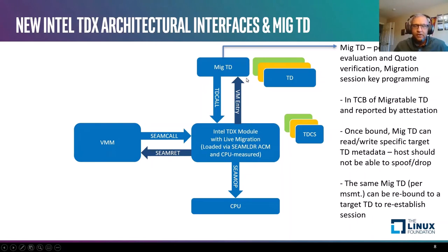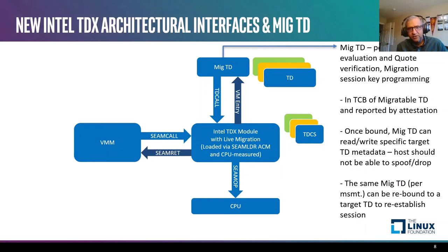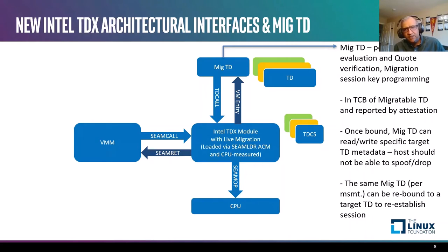The migration TD is a new TCB component introduced. It is in the TCB of the TDs that are migratable, just like the TDX module. It performs functions specific to migration, like evaluating the migration policy, performing code verification to mutually authenticate the source and the destination platform, as well as setting up the migration session key that is programmed to protect data transfer between source and destination. A migration TD is attached to a migratable TD — or the tenant TD — through an explicit bind operation. That allows the migration TD access to certain metadata of the target TDs that are migratable. The measurement of that bound migration TD is evident to the relying party that looks at the code for a particular tenant TD. The same migration TD can be rebound to a target TD to reestablish a session if required.